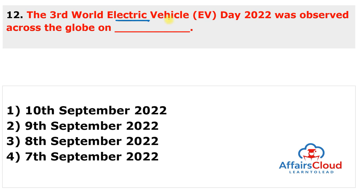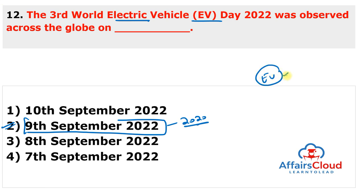The third World Electric Vehicle Day 2022 was observed on 9th September 2022 to spread awareness about the benefits of using electric vehicles. It was also first observed in 2020. China is the largest electric vehicle market in the world and has emerged as the top producer and seller of electric vehicles globally.